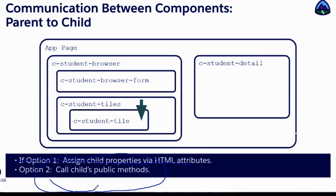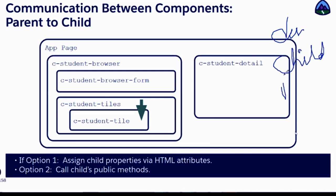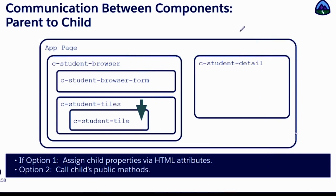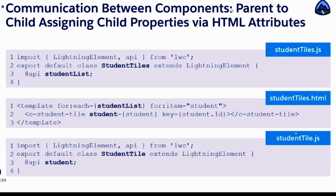The other option for passing information from parent to child is calling the child's public method. So the first question is: how do you create a public method? In the parent component, you have a div tag, then a child tag, and other elements. In the JavaScript of the parent, you will search for the tag with the name of the child component. If it is present, you grab it in an object, and on that object, you call the public method. That is the way to invoke a public method from your child into your parent.